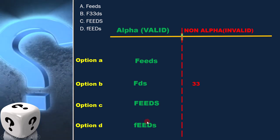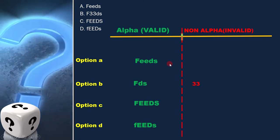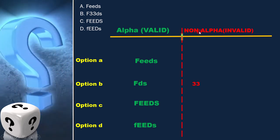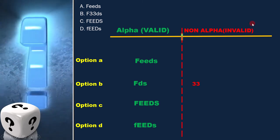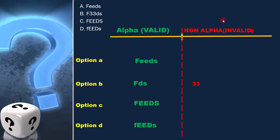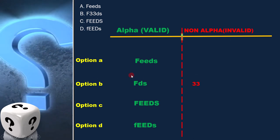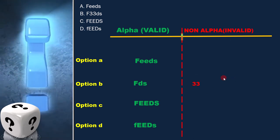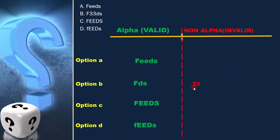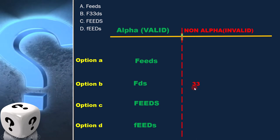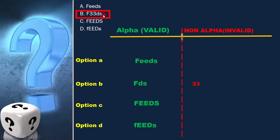As per the question, we have to find which of the following test cases is from an invalid equivalence partition. It is clear that option B is the answer, as '33' represents an invalid class. Therefore, option B is the answer.